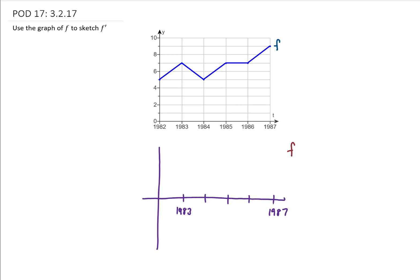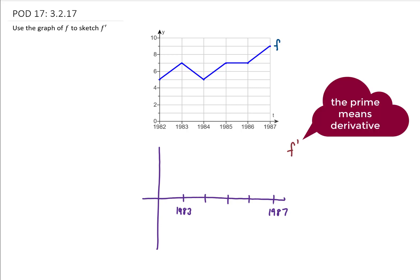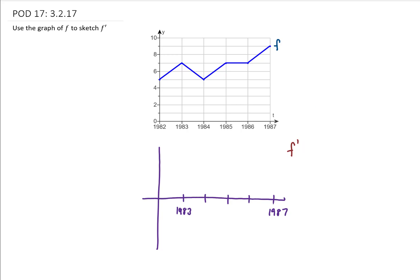And if we're going to draw a sketch of f prime, we need to know first that f prime means the derivative of f, and that the derivative of a function is the slope of a function. So let's just work from left to right on this original function and always ask the question,